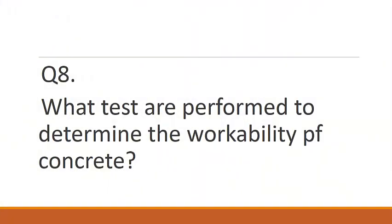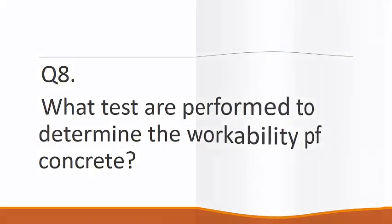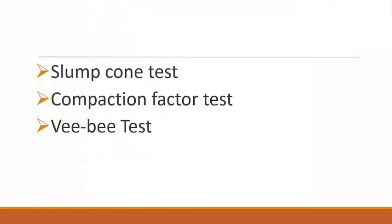Question eight is: what tests are performed to determine the workability of concrete? Three types of tests can be performed: the slump cone test, the compaction factor test, and the Vebe test. For more workable concrete, the slump cone test is used. For medium workable concrete, the compaction factor test is used. For hard and less workable concrete, the Vebe test is generally used.